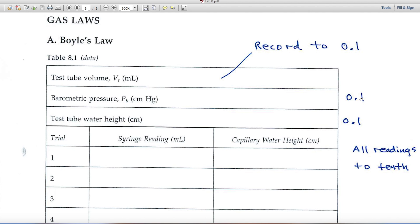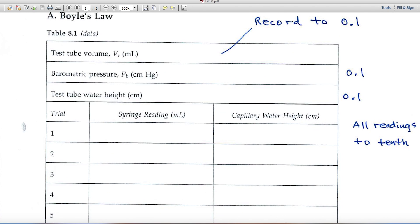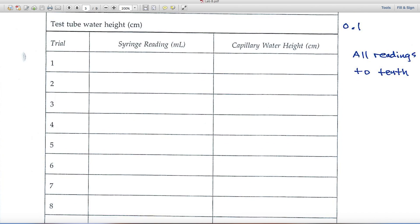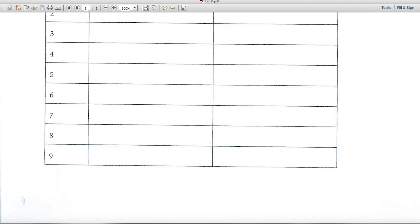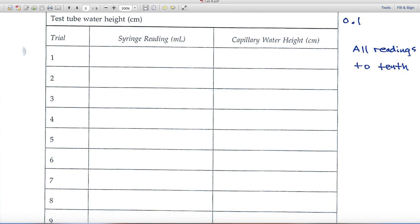The barometric pressure will be given to you. And again, you'll want to record it to the tenth. And then finally, the test tube water height will record to the tenth. And the same is true of all the readings in this first table. You'll want to record everything to the tenth.